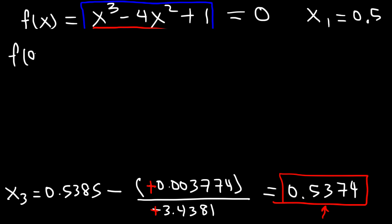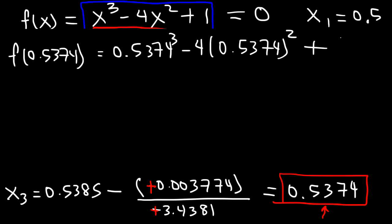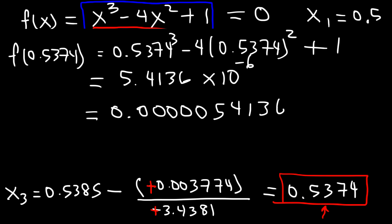So let's evaluate f of 0.5374. Let's see if it's equal to 0. So go ahead and type that in to your calculator. So I got 5.4136 times 10 to the minus 6. So that's very small, basically 0.000054136. So we could say that is approximately 0, which means the solution is 0.5374.